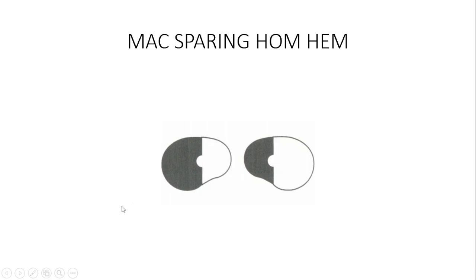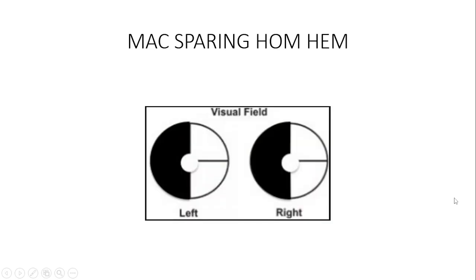Similarly, left homonymous congruous macular sparing hemianopia means the lesion is at the right occipital lobe. When you have a similar amount of fibers affected with macular sparing, the lesion is consistently at the occipital cortex.